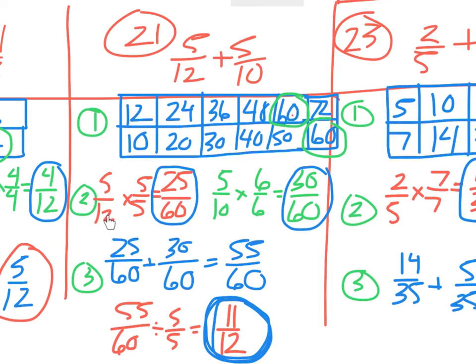Such as here, 12 times what is 60? Well, you just count one, two, three, four, five. Oh, okay, five over five.